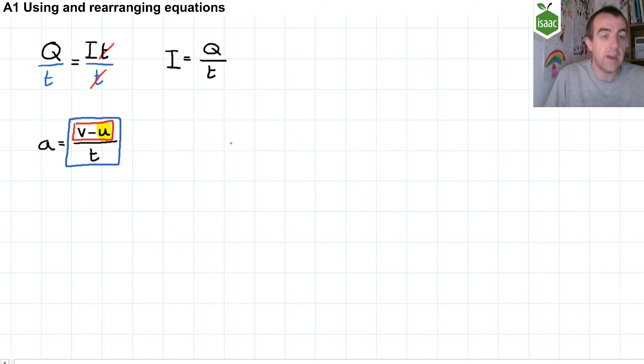So first of all, let's deal with that T. Let's multiply both sides by T, and I'll just draw some brackets around the V minus U so that you can see that the entirety of this term here is being multiplied by T. Those T's now cancel, and we are left with V minus U on the right-hand side.